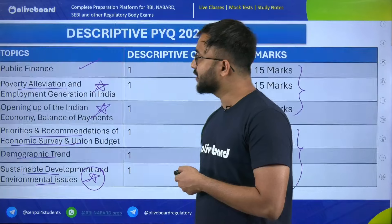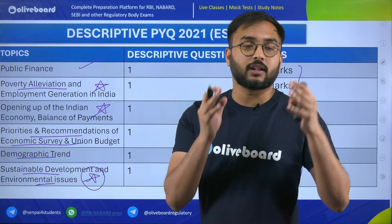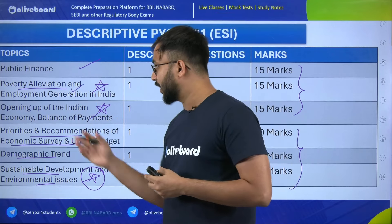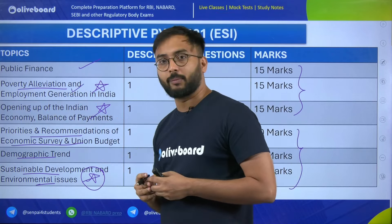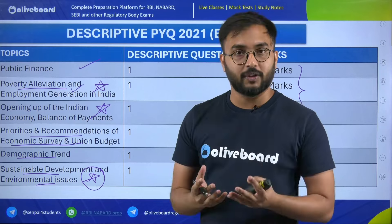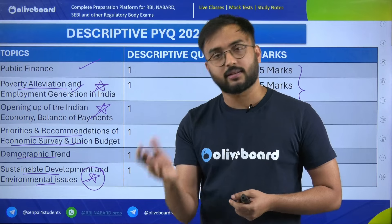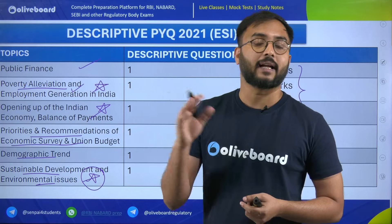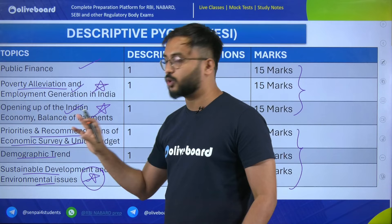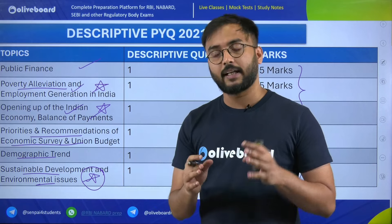Looking at all the topics, the first-priority green color chapters include: introduction to economics, measurement of growth, poverty alleviation, employment generation, environmental issues, and sustainable development. These are very important as they form the foundation of economic and social issues — this is where your basics of economy start. From poverty alleviation, employment generation, environmental issues, and sustainable development, we have seen multiple descriptive and objective questions. That is why these should be completed first.